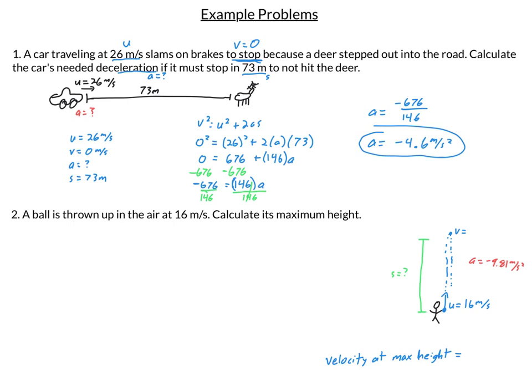The other variable that we know is the final velocity. See, whenever you're at the maximum height, your final velocity, your velocity at max height is zero. That's something that you need to write down in your notes: velocity at max height in y-axis problems is always zero meters per second.